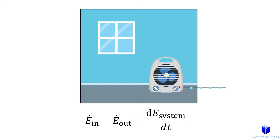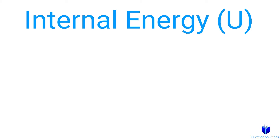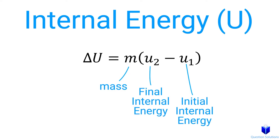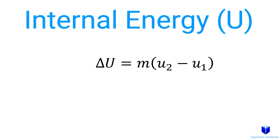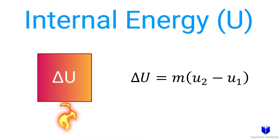A dot on top means it's a time rate. Now since we will mostly focus on internal energy change, we need to remember how to find it. To find internal energy, we can use this equation. This is mass, this is the initial internal energy, and this is the final internal energy. When a process takes place — for example, heat is added to a system or work output — there is a change in internal energy. The goal is to figure out this change using the energy balance equation.